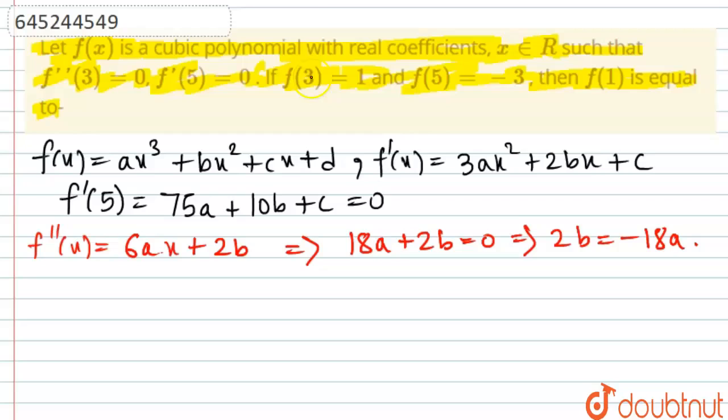Now let's look at the values, that is f(3) is 1. So f(3) = 1 implies, if you put the values, we will be getting 27a + 9b + 3c + d = 1.